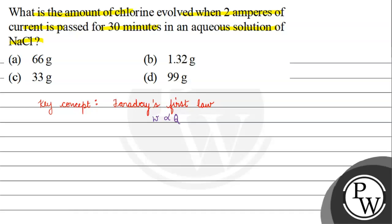Now what is the question? The question is that the amount of chlorine has to be removed when our current is 2 amperes and the time given is 30 minutes. 30 minutes we will convert: 30 minutes into 60 seconds will be 1800 seconds, right?